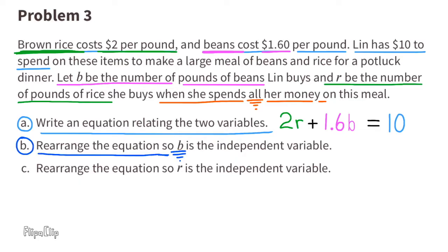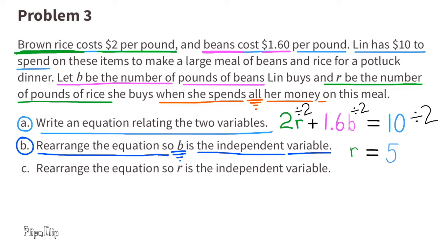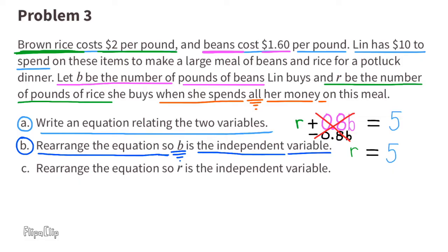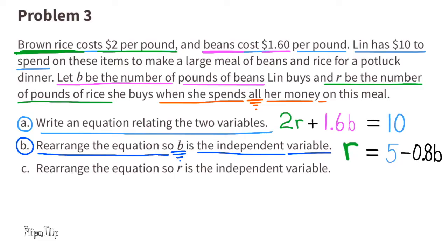B. Rearrange the equation so B is the independent variable. To get R by itself, divide every term by 2. 2R divided by 2 is 1R, and 10 divided by 2 is 5. Now divide the B term by 2: 1.6B divided by 2 equals 0.8B. Since we need the independent variable on the other side, subtract 0.8B from both sides. The equation reads R equals 5 minus 0.8B.